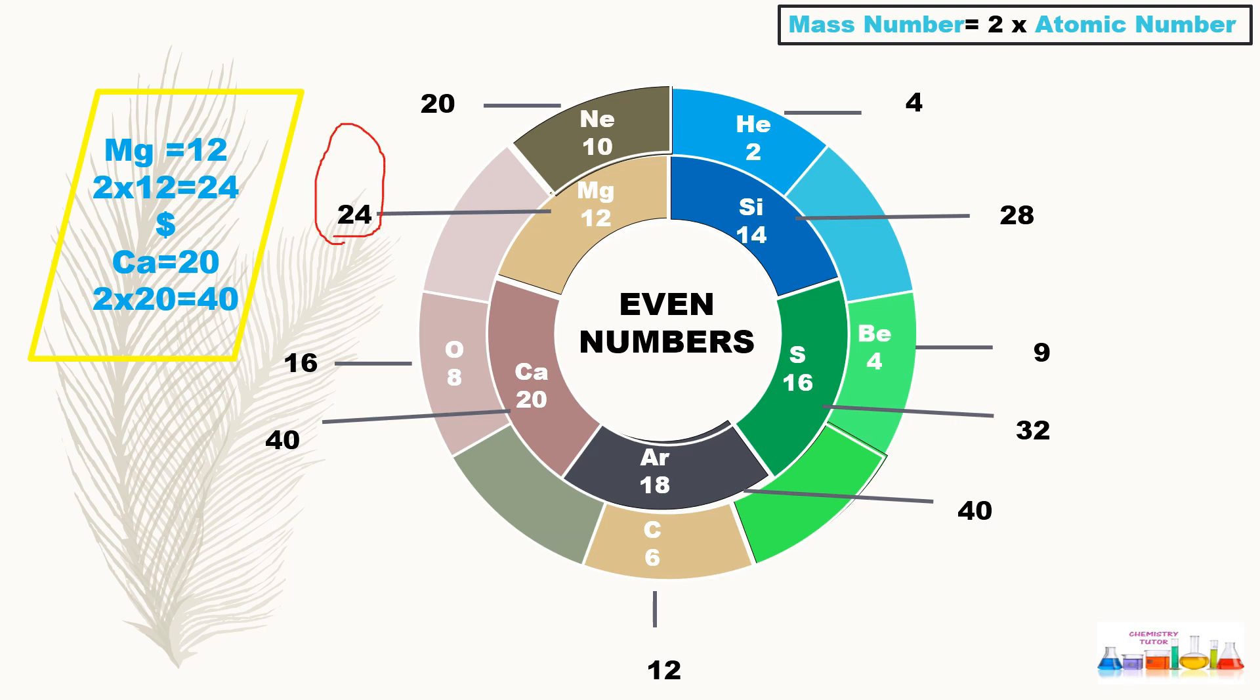If we take calcium with atomic number 20, we multiply 20 by 2 to get 40, which is the atomic mass of calcium. So in this way we can memorize the mass number of these even numbers very easily.